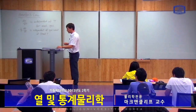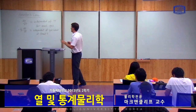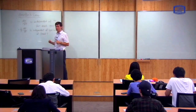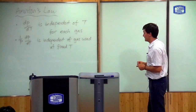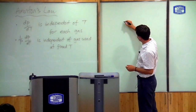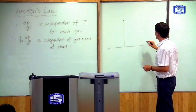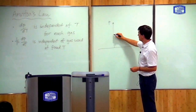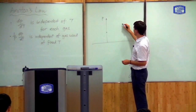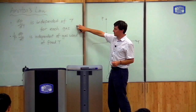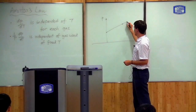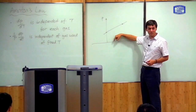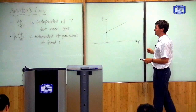So last time, if you remember, we were talking about Hamilton's law, and there were two parts. The first part says that the rate of change of pressure with respect to temperature is independent of temperature if we're looking at a gas. This is an important way of measuring temperature because if we draw a graph of the pressure of a gas as a function of temperature, we can measure the pressure at zero somewhere here and the pressure at 100 somewhere here. The first part of Hamilton's law says that this should be a straight line. That means by measuring the pressure of the gas we can work out the temperature.